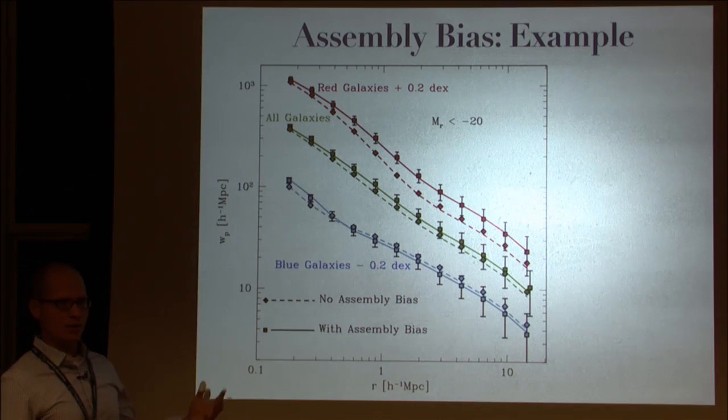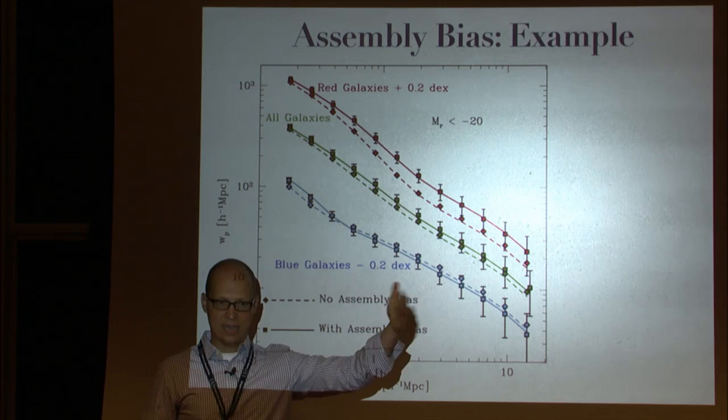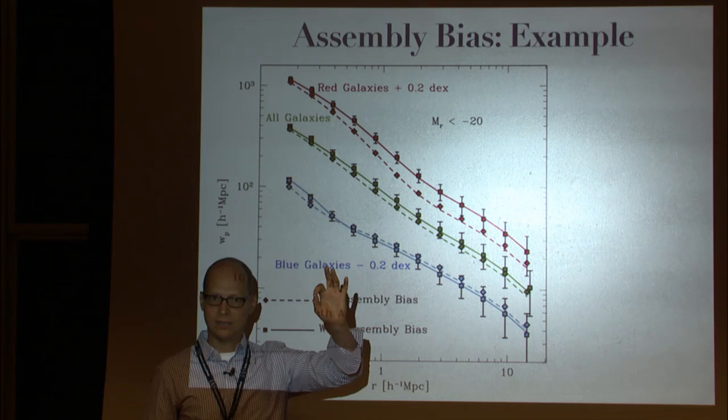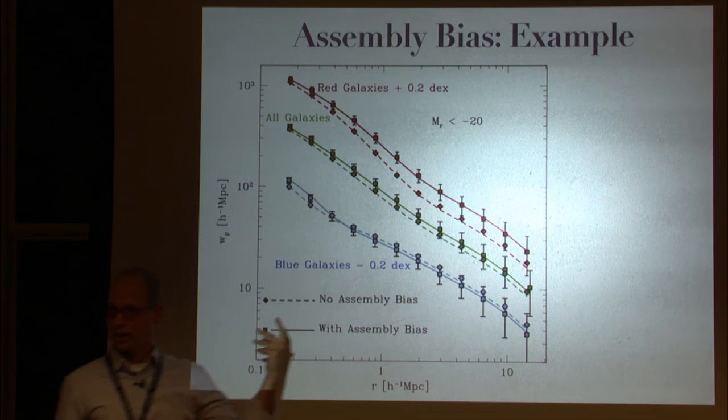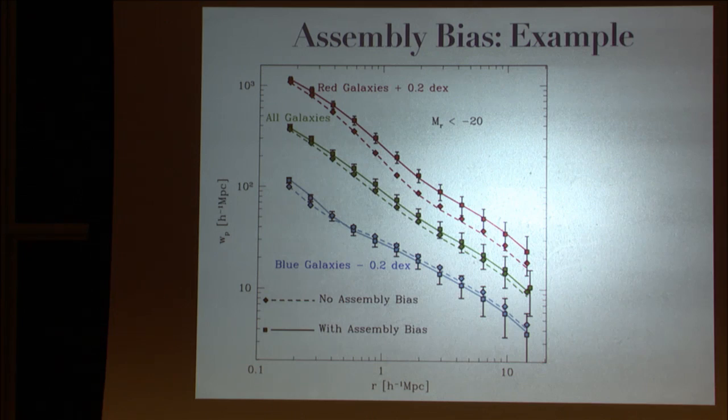And then you preserve the HODs. The HODs are exactly the same. The HODs that go into making these clustering predictions are all the same. So the two, in each case, the dash and the solid line have the same HODs. I generate these new data points, which are the lower data points, they have no assembly bias in them. And the dash lines are the fits to those mock data. And so the question is, what do you get from this exercise? And I hope the exercise is clear. I have a catalog that has assembly bias in it.